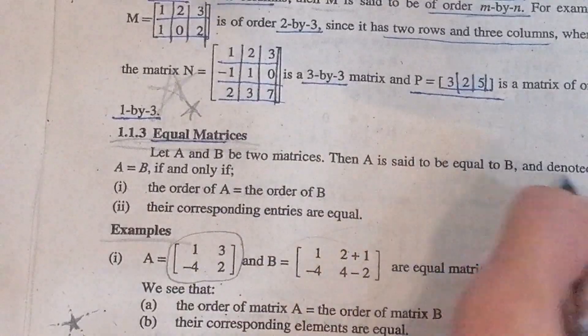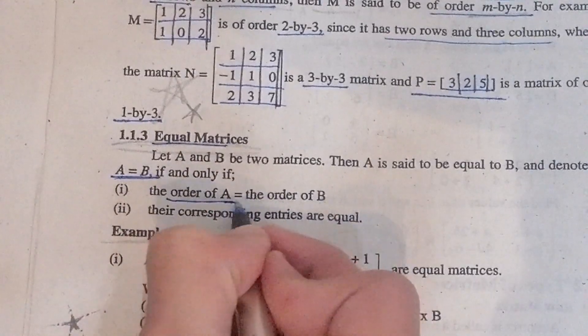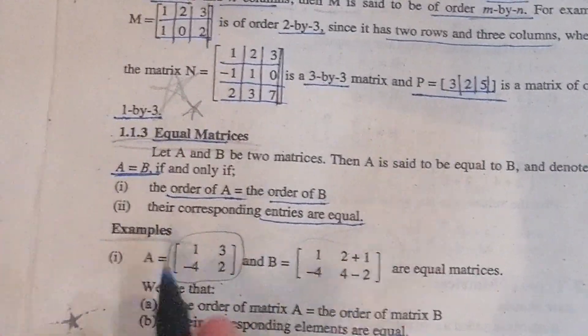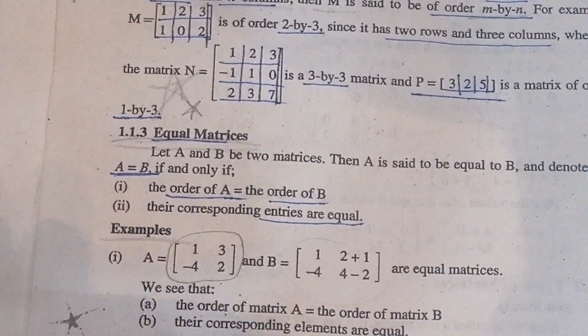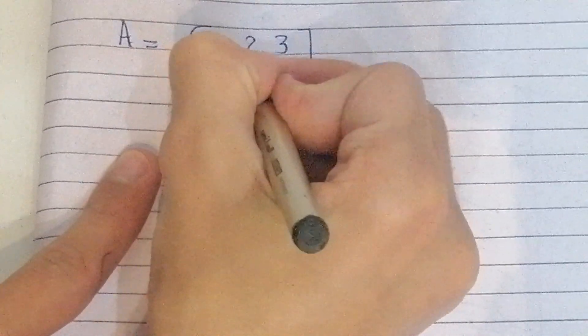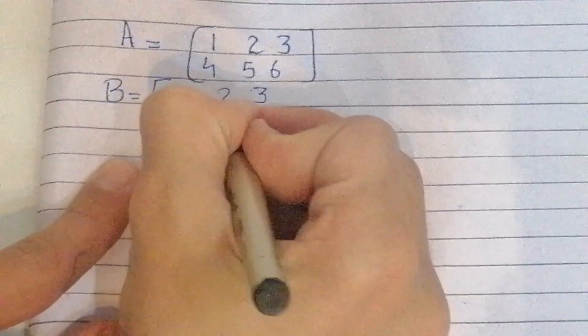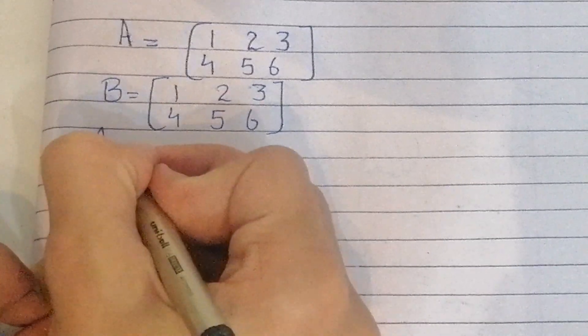Matrices A and B are called equal matrices, denoted A = B, if the order of A equals the order of B and their corresponding entries are equal. For example, if matrix A has entries 1, 2, 3, 4, 5, 6 and matrix B also has entries 1, 2, 3, 4, 5, 6 with the same order, then A = B.